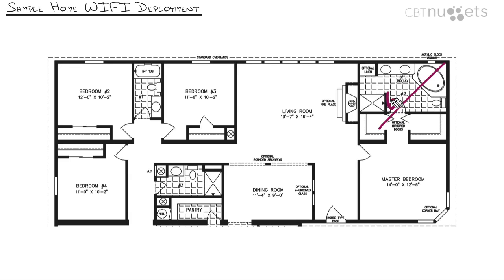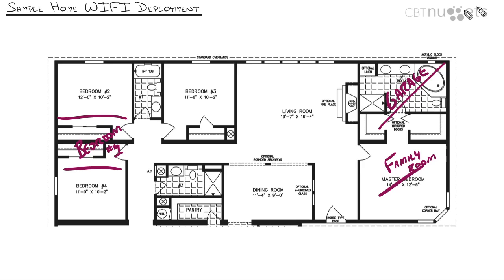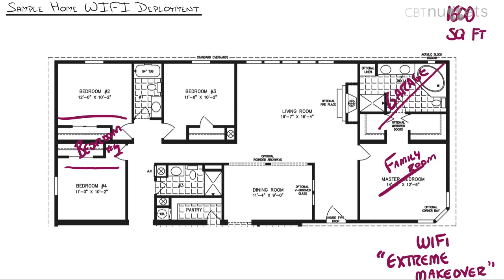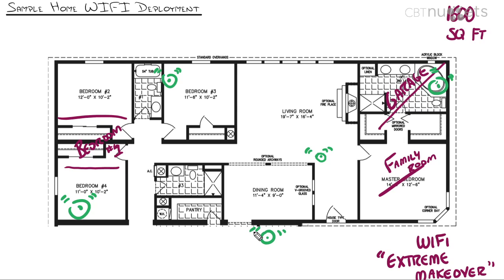My house was built in 1978 — the garage is actually the family room and there's a fourth bedroom squeezed in. My house is 1,600 square feet, and I would call it 'Wi-Fi extreme makeover' because I have five wireless access points in a 1,600 square foot home — but they're there for good reason. I've got one in the dining room area, one in the kids' bedroom, one in my bedroom, one in the garage, and one near the back patio.